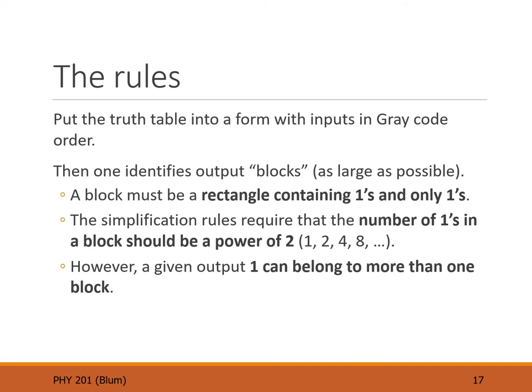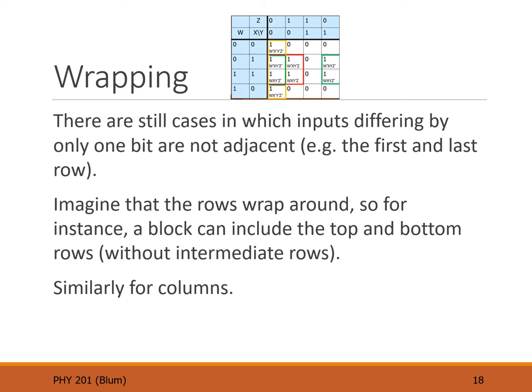Even after splitting inputs between rows and columns, there are still rows which differ by one bit but are not consecutive. For example, the first row where W=0, X=0 and the last row where W=1, X=0 differ by only the bit W but they're not consecutive. The same happens for columns. So when looking for blocks you must consider wrapping — the first row and the last row can be considered next to each other, and the first column and the last column can also be considered next to each other.